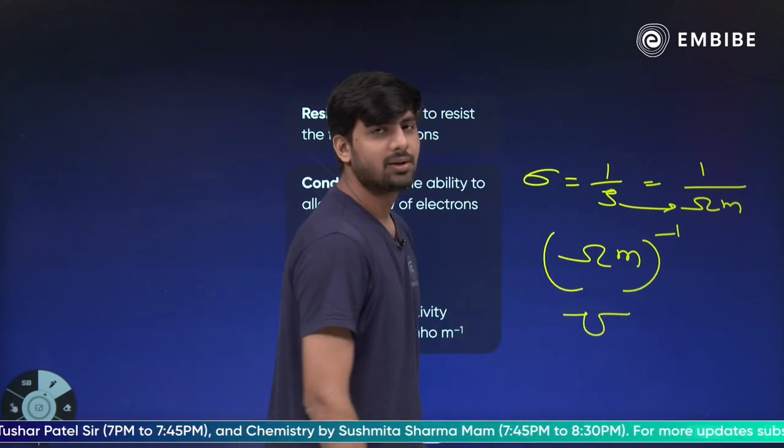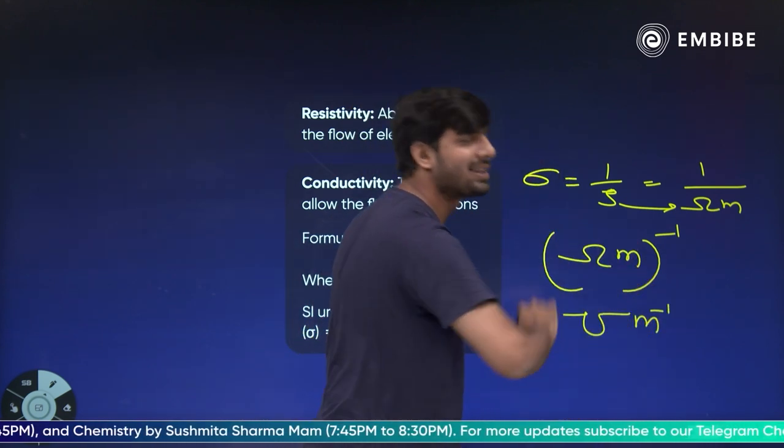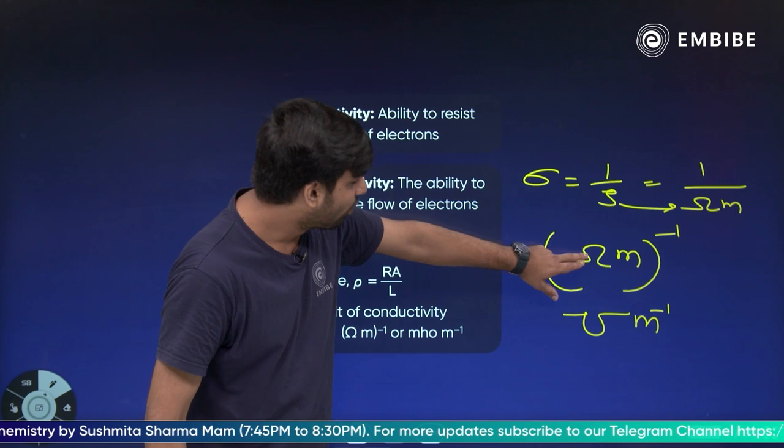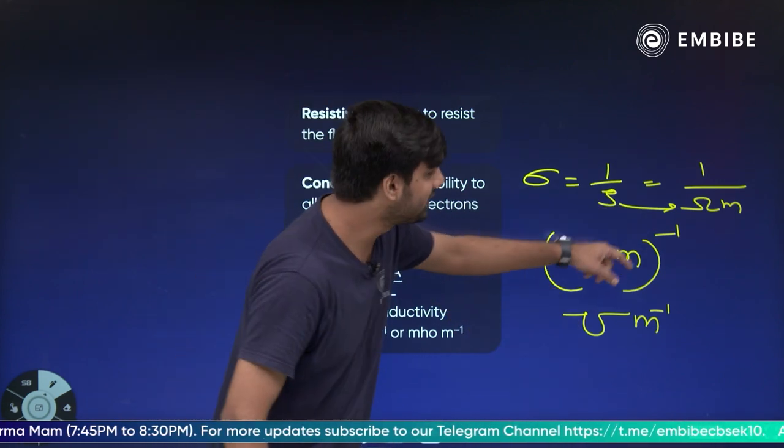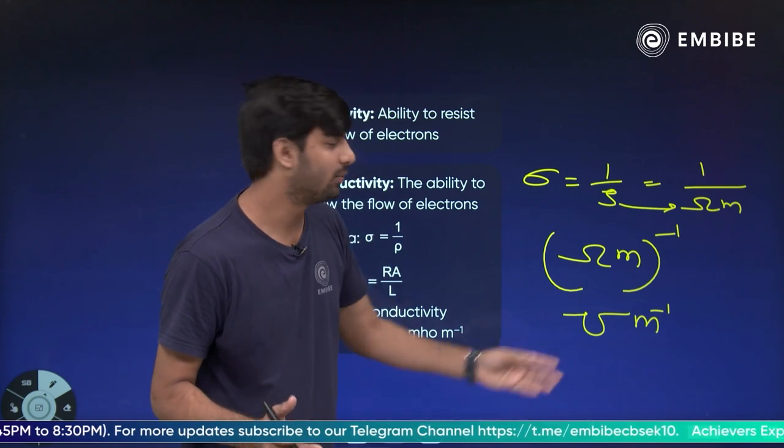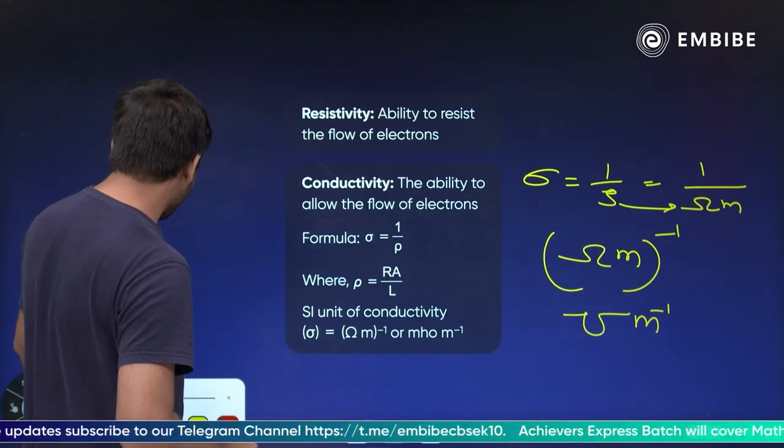Ye symbol ka ulta kar diya, to please, meter ka inverse meter inverse hi hota hai, usko W mat bana dena. Ohm ka inverse ulta ohm ka symbol hota hai meter inverse, meter inverse hota hai. OK, wo ulta karke W mat bana dena please. Chalo iska naam dekho kaisa diya. Bahut creative hota scientist.